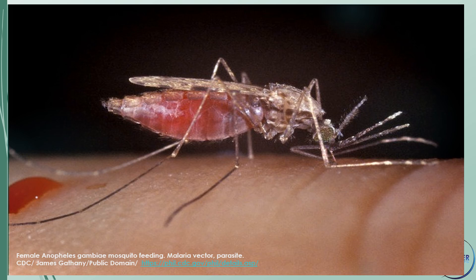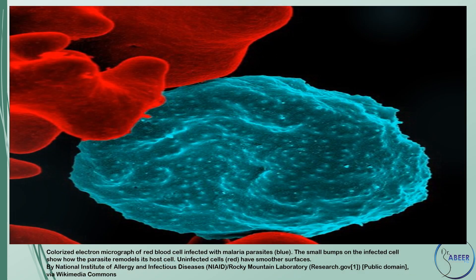The protozoan parasites — Plasmodium falciparum, Plasmodium vivax, Plasmodium malariae, and Plasmodium ovale, and extremely rarely Plasmodium knowlesi — are transmitted by the bite of a sporozoite-bearing female anopheline mosquito. After a period of pre-erythrocytic development in the liver, the blood stage infection which causes the disease begins.